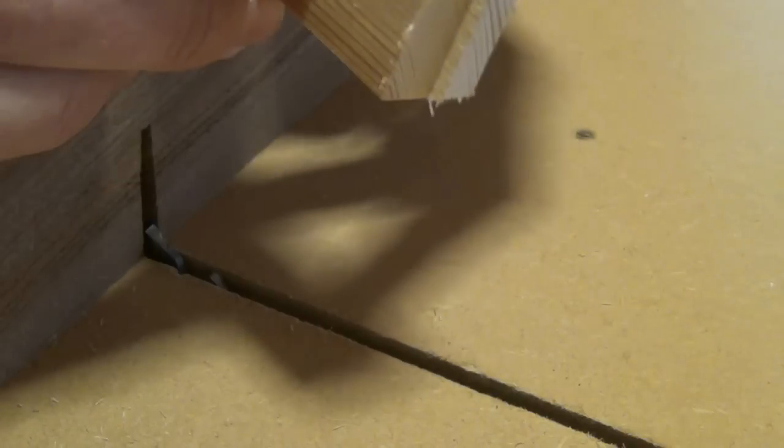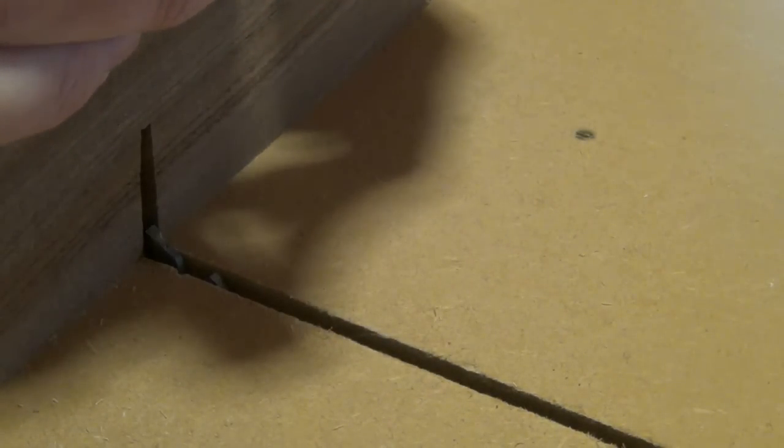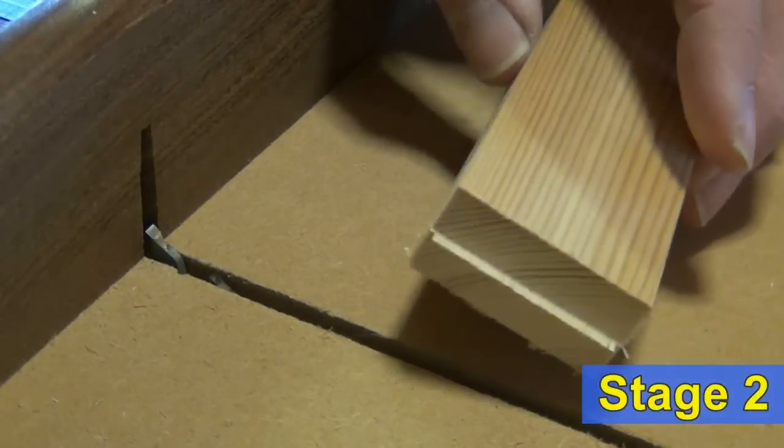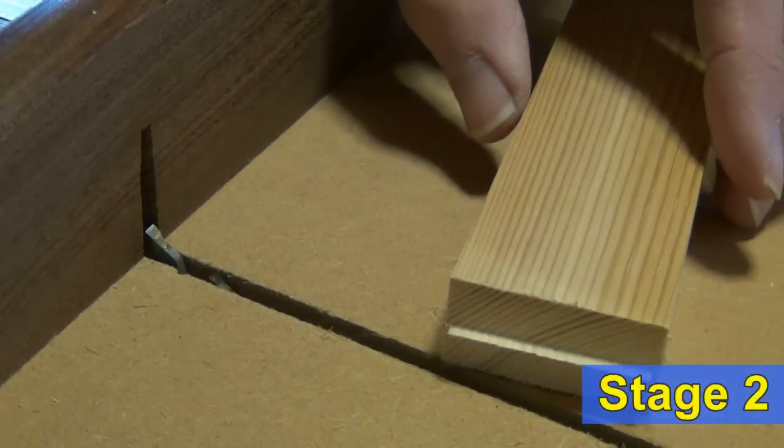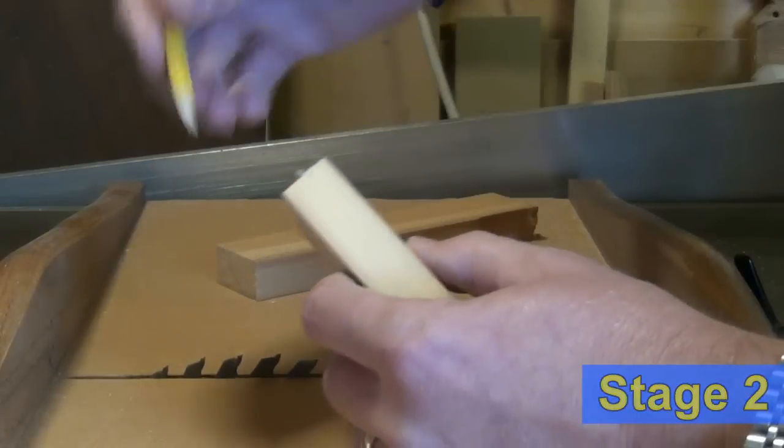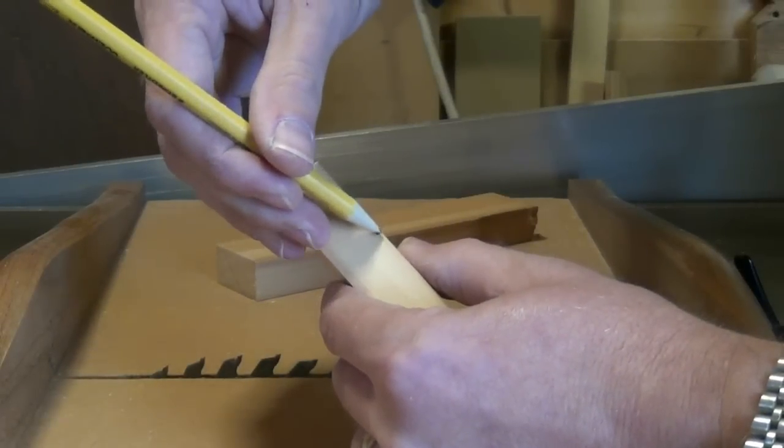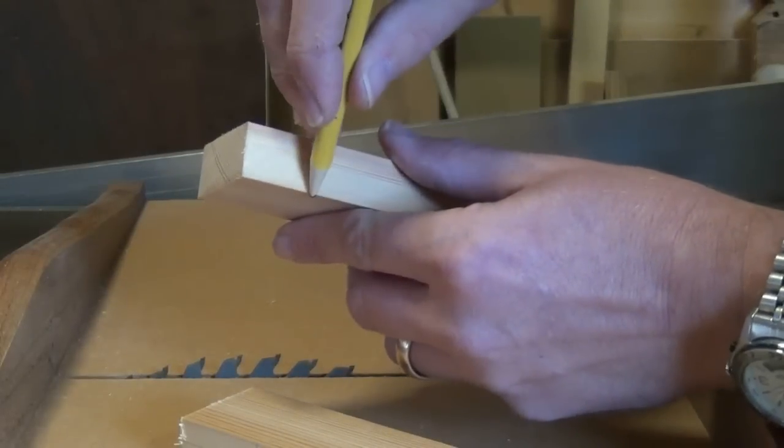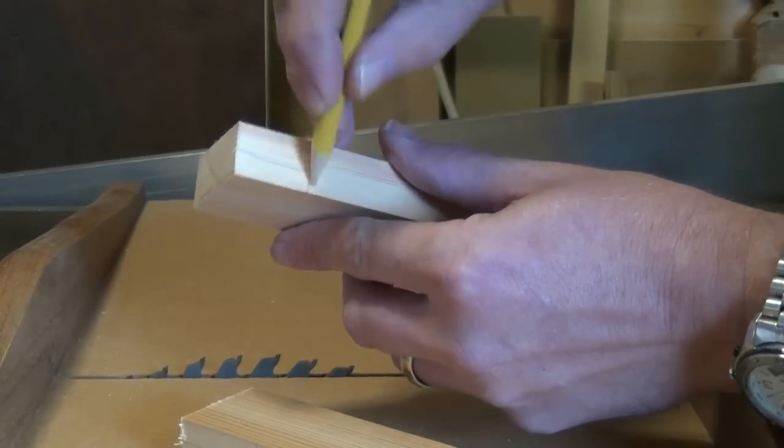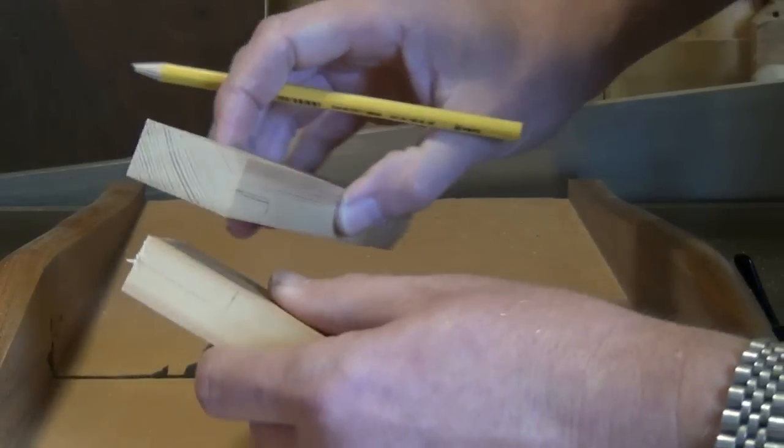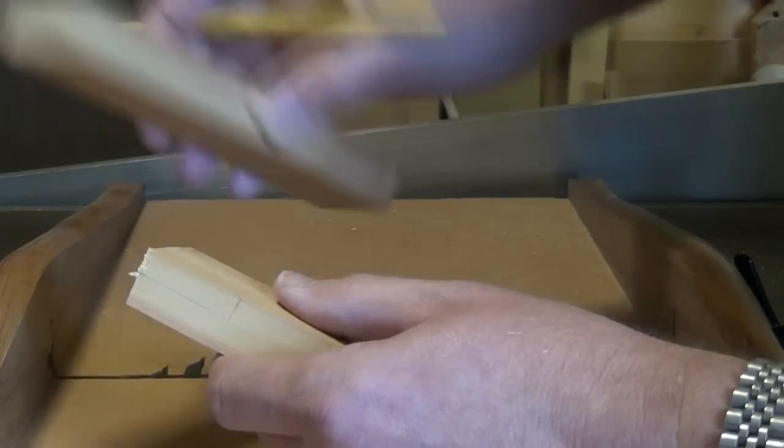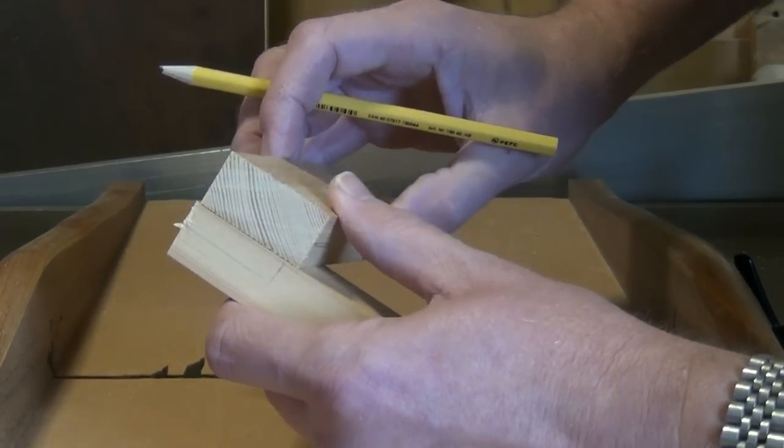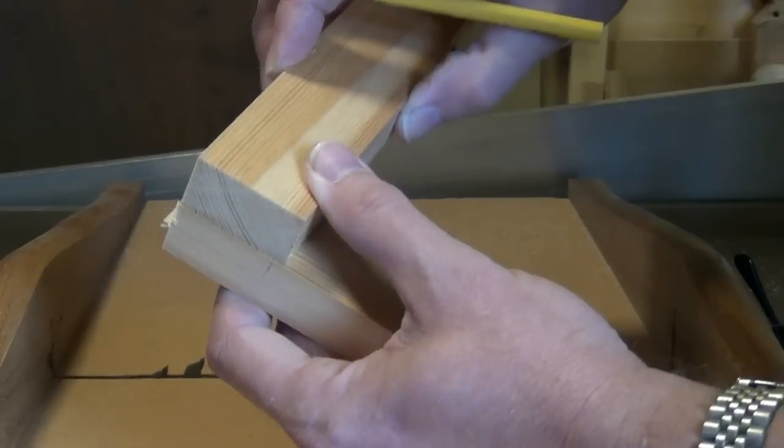Now to finish preparing the joint, we need to mark up. So I want to remove this material here and this material here, and I want my cut to extend at least the width of this material. So I'll leave a little bit extra to clean off with the plane afterwards on here. Make a mark.